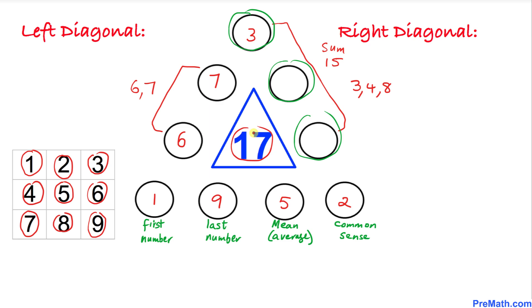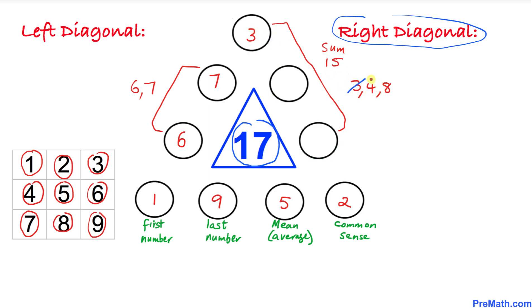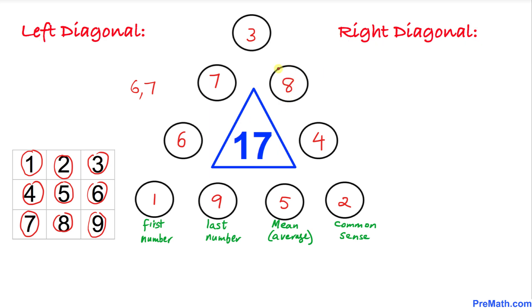Since 3 is already placed, we are left with 4 and 8 for the two remaining circles on the right diagonal. Placing 4 at the top and 8 in the next circle, we verify: 2 + 4 + 8 + 3 = 17. No matter which straight line we check, the sum is always 17.